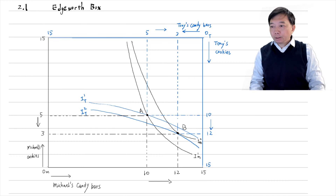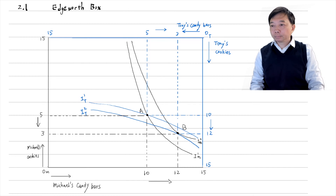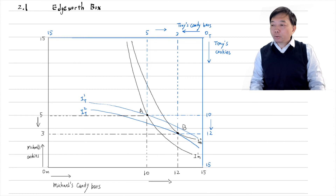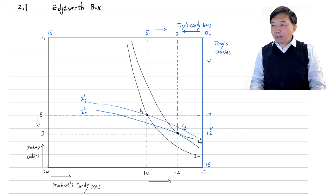After trading, the two people's indifference curves IM2 and IT2 are tangent at the new allocation B. The marginal rates of substitution of the two indifference curves are equal. Michael and Tony are both better off after trading, because they are now at higher indifference curves. At the new allocation B, no further mutually beneficial trades are possible because the allocation at this point is Pareto efficient. No party can be better off without harming the other.